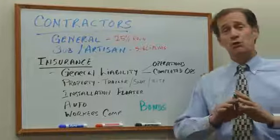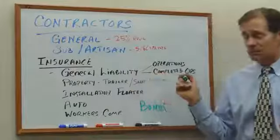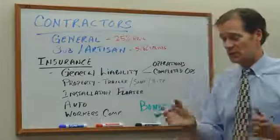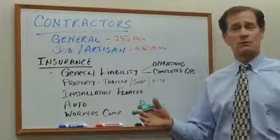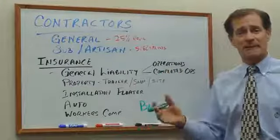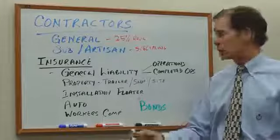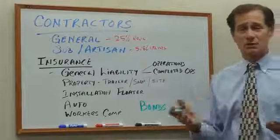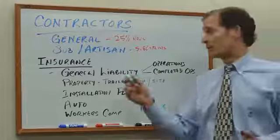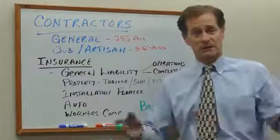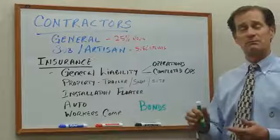Completed operations means you've left — you've been gone for six months. The classic example: this happened on the Cape several years ago. New deck. Homeowner loved the new deck, invited all their friends over for a party. There were about 100 people on the deck and it failed. A lot of people were hurt. That's a completed operations claim. So when all these people hire lawyers, they're going to go to the guy that built the deck, even though he left six months ago.